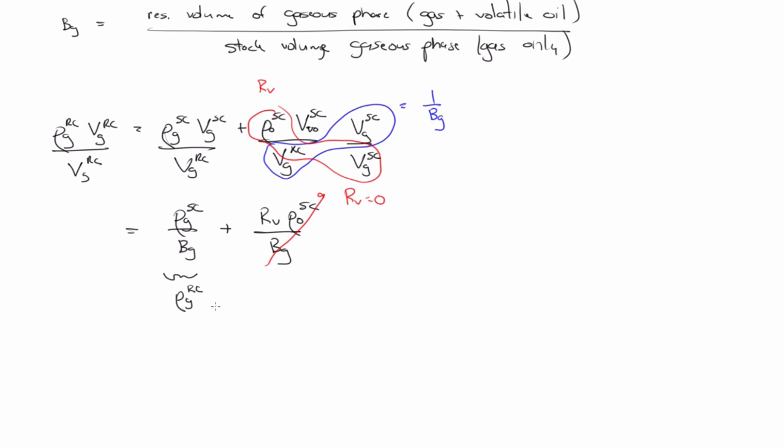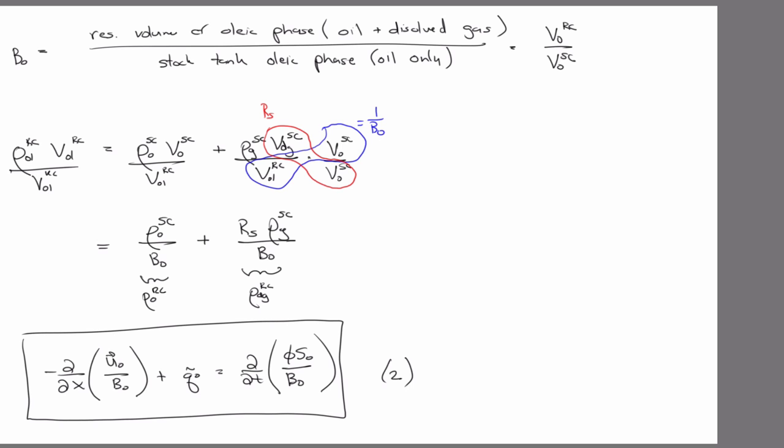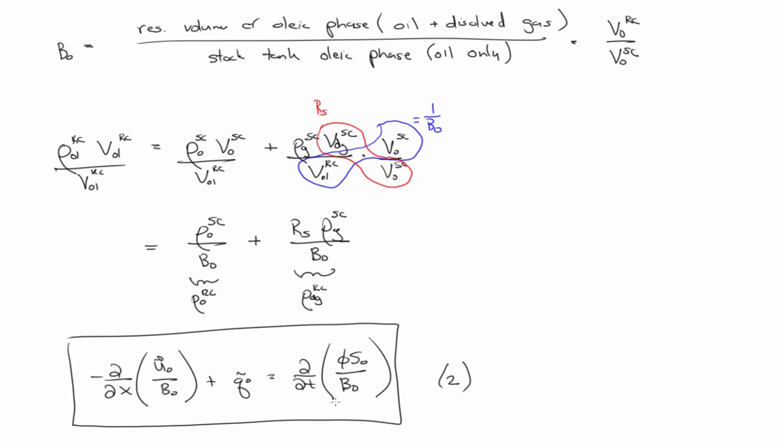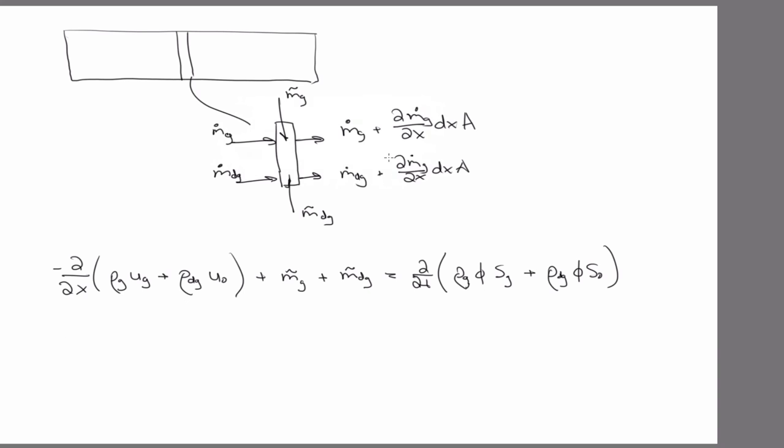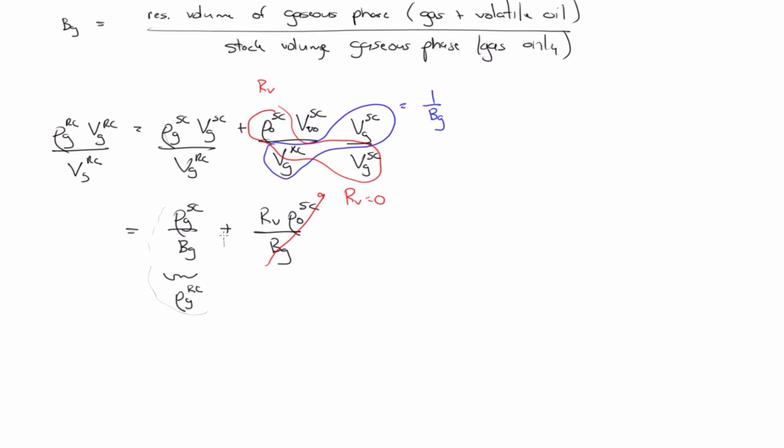And so we plug that back into our mass balance equation. And then along with, from the previous slide, don't forget we had this relationship that we didn't really use, the density of dissolved gas under reservoir conditions. So we're going to use both of that along with this, plug them back into the mass balance equation and then for gas.